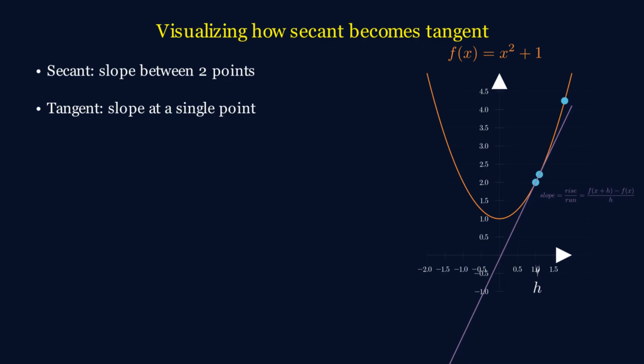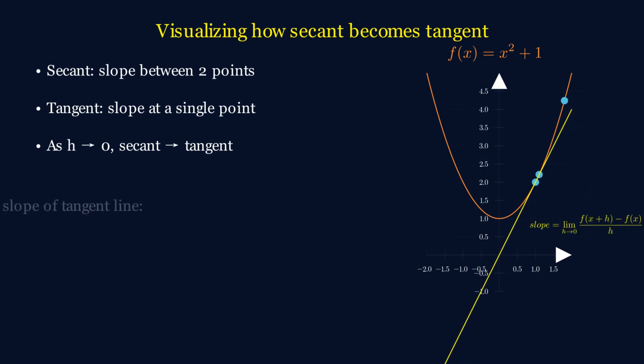Now, imagine we have two points on the curve, and we start bringing them closer and closer together. As the second point approaches the first, the secant line slowly turns into the tangent line.